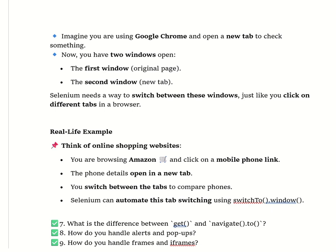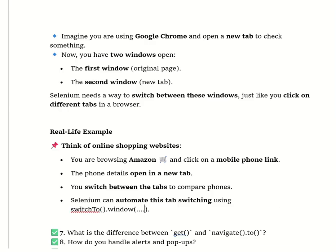In the interview, explain it like this: getWindowHandle gets the current window's unique ID; getWindowHandles gets all open window IDs; and switchTo().window(windowId) switches control to the specified window by passing the window ID as a parameter.